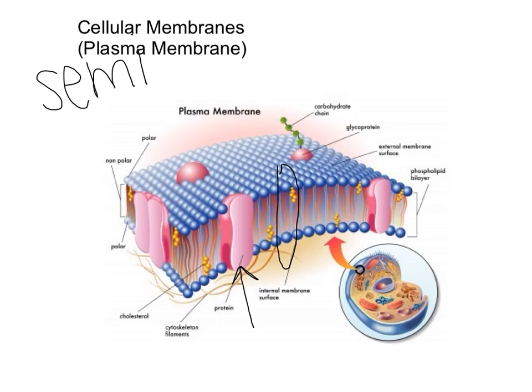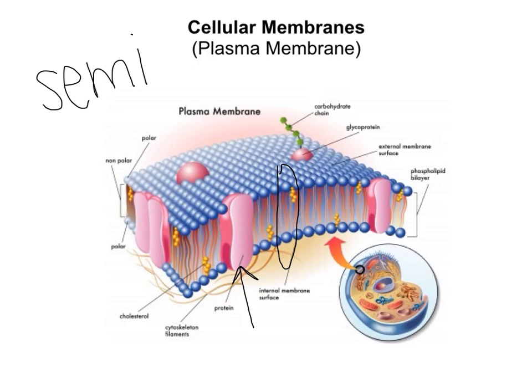We know that the plasma membrane, the cell membrane, moves around the cell. It's not stationary. It's constantly moving around and things are going in and out of it. This is a really important concept to keep in mind as we go through this video and talk about why and how things move through our membranes.